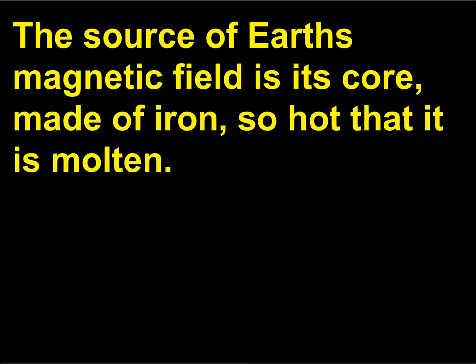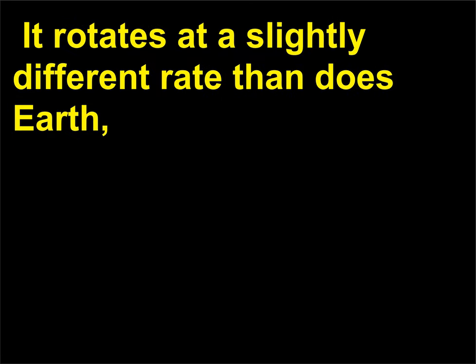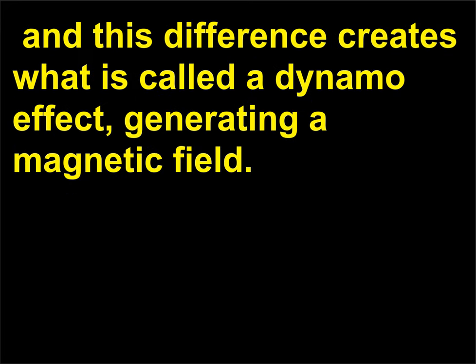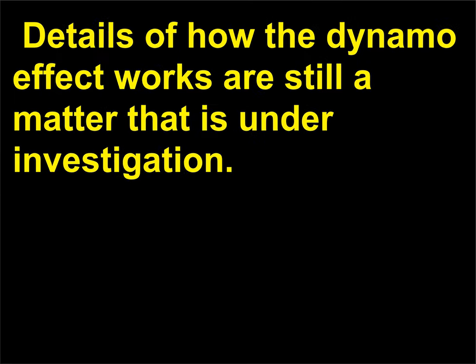The source of Earth's magnetic field is its core, made of iron so hot that it is molten. It rotates at a slightly different rate than does Earth, and this difference creates what is called a dynamo effect, generating a magnetic field. Details of how the dynamo effect works are still a matter under investigation.